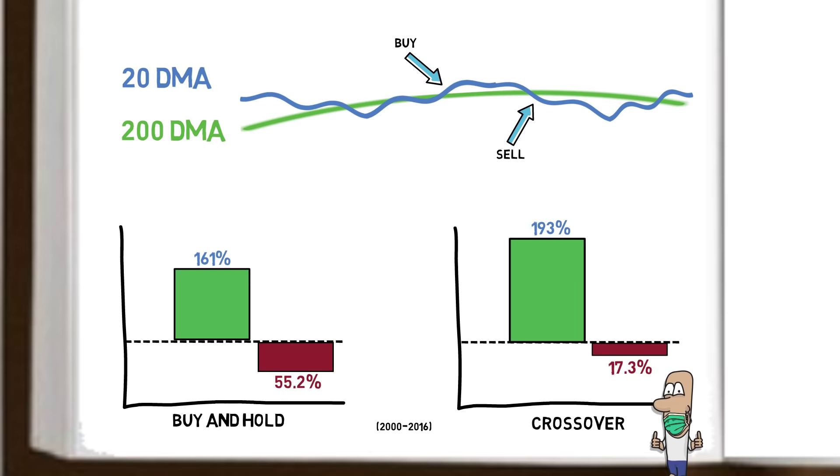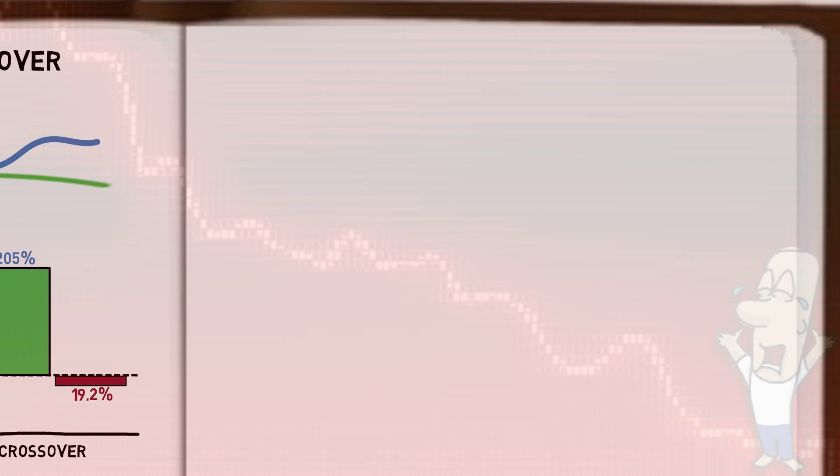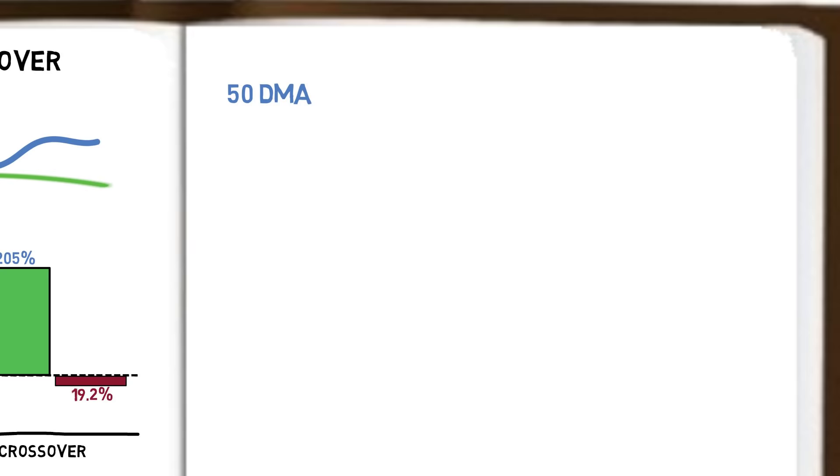Before we check how each system reacted to the 2020 pandemic crash, we look at our final crossover system, this time using the 50 day and the 100 day moving averages.